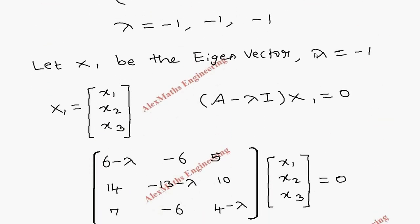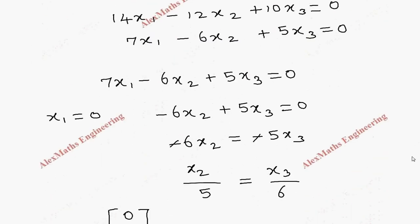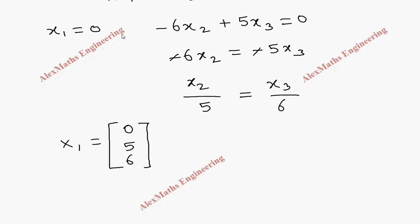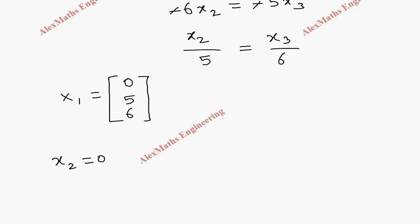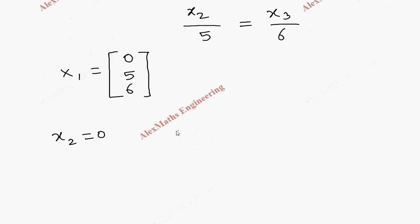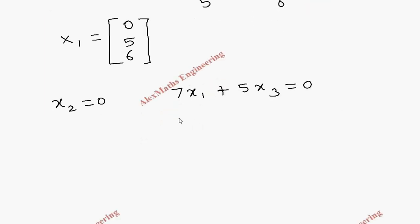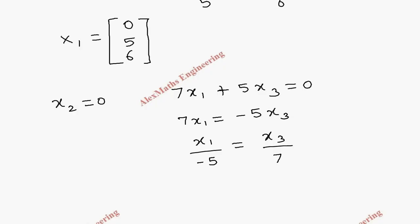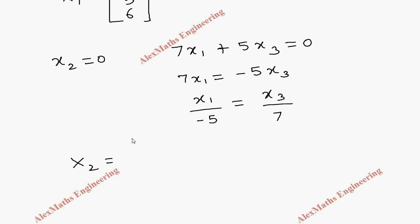For the second eigenvector corresponding to lambda equal to minus 1 (repeated value), we again get the same three equations. So we take a different assumption: let x2 equal to zero. Then 7x1 plus 5x3 equal to zero, giving minus 7x1 equal to minus 5x3, so x1 by minus 5 equal to x3 by 7. Therefore the eigenvector X2 is [minus 5, 0, 7].